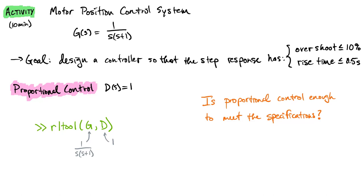This activity is the first of several that will use this motor position control system with this open loop transfer function, with a goal of designing a controller that achieves a step response with less than 10% overshoot and a rise time of less than 0.5 seconds. We're going to incrementally try each controller type on this system to achieve these design criteria, and see which ones work and which ones don't.